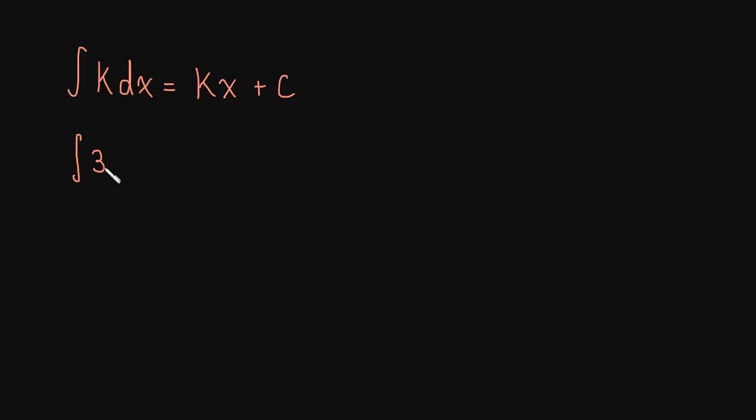So what's the antiderivative of 3? Well, this is just equal to 3x plus c, and hopefully you're comfortable enough with derivatives to be able to take this derivative really quickly in your head and find out that, yeah, that's just 3. When we take that derivative, we just get 3.